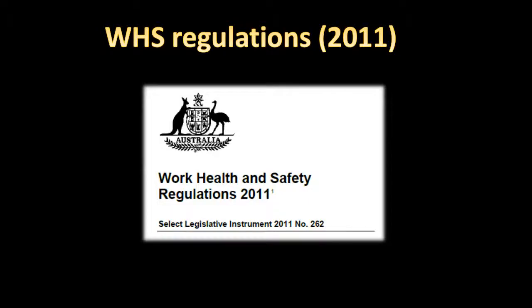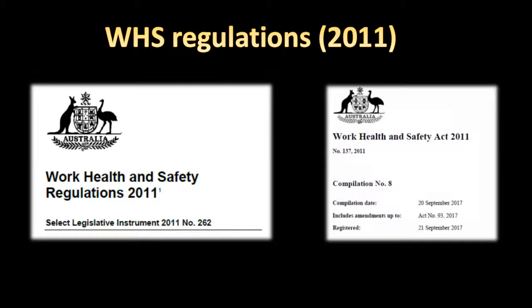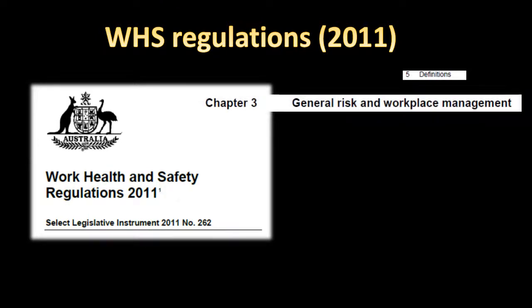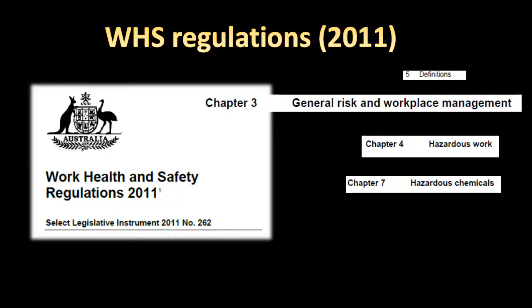The Australian Work Health and Safety Regulations provide guidelines on how to apply the provisions of its accompanying piece of legislation, the Work Health and Safety Act. Among others, the regulations cover such details as definitions, general workplace risk management, guidelines for hazardous work environments, dealing with hazardous substances and materials, and how to respond to major incidents.